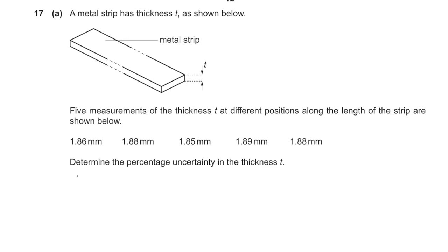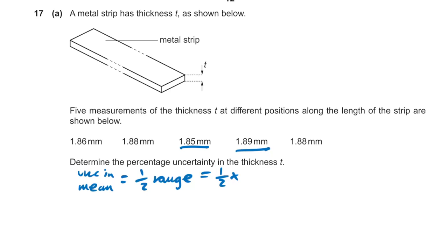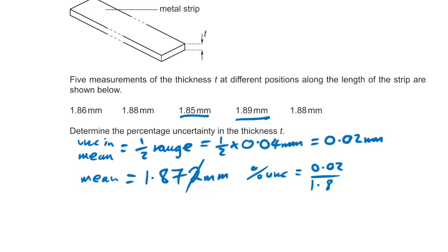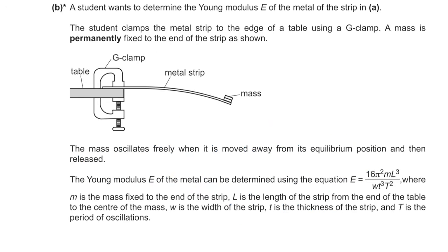Question 17b: five measurements of metal strip thickness. Determine the percentage uncertainty in thickness t. The uncertainty in the mean is half the range: the range is 0.04 mm, so uncertainty = 0.02 mm. The mean thickness is 1.87 mm. Percentage uncertainty = (0.02 / 1.87) × 100 ≈ 1%.